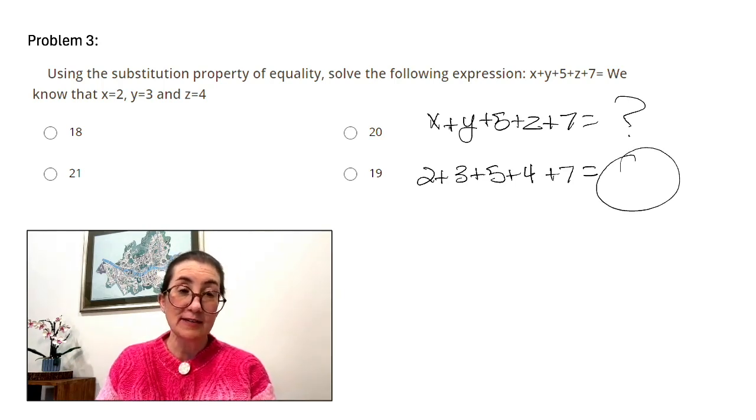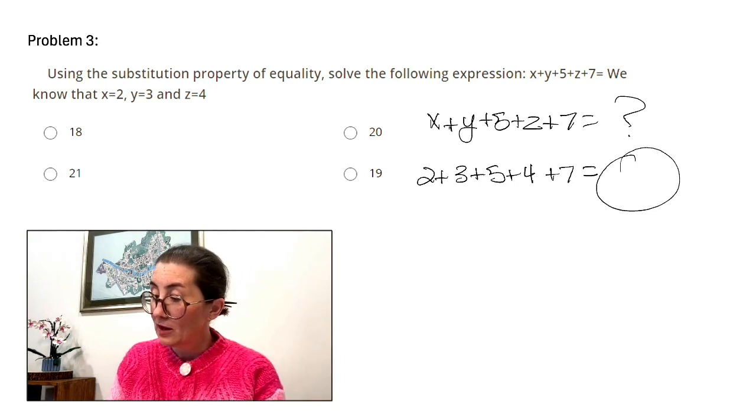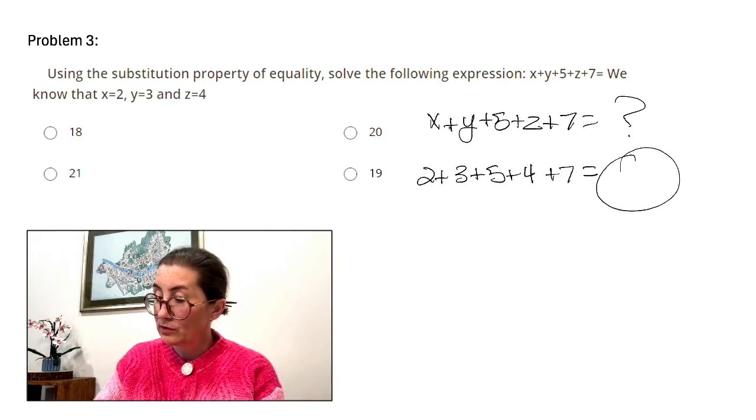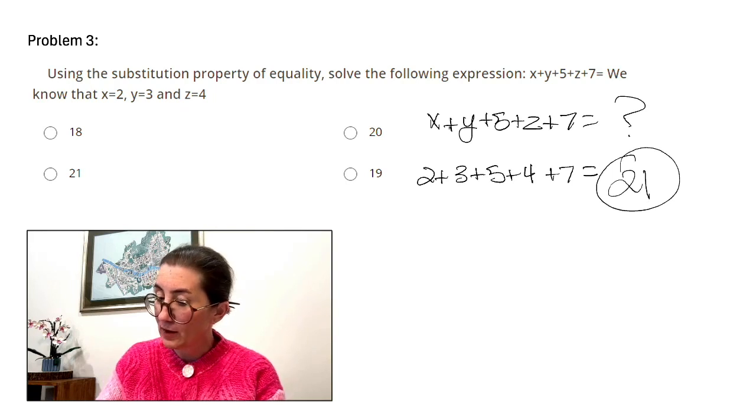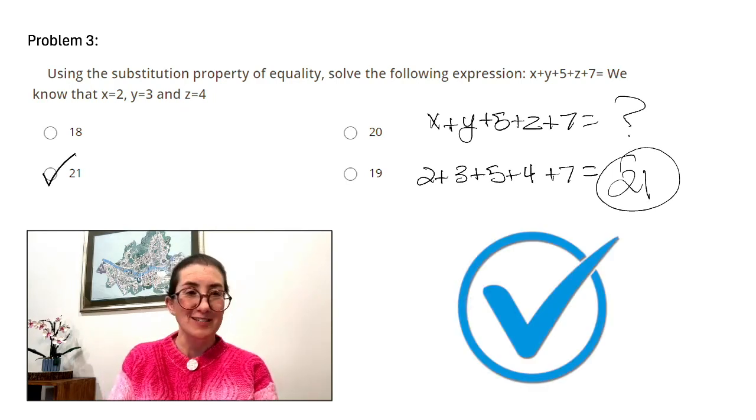All right. All we have to do now is add up our numbers. 2 plus 3 equals 5. 5 plus 5 equals 10. 10 plus 4 equals 14. And 14 plus 7 equals 21. And there's our answer.